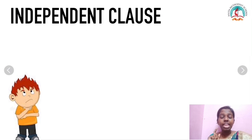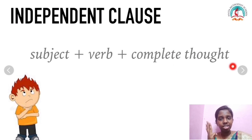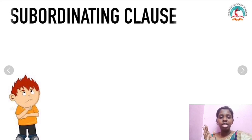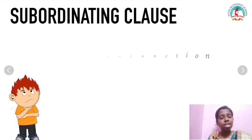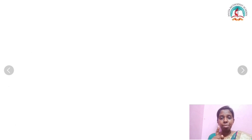What is an independent clause? In an independent clause, you have a subject, a verb, and a complete thought. It is complete, so an independent clause can stand on its own. Then we have the subordinating clause, also called a dependent clause. In a dependent clause, we have a subject, a verb, and a subordinating conjunction.